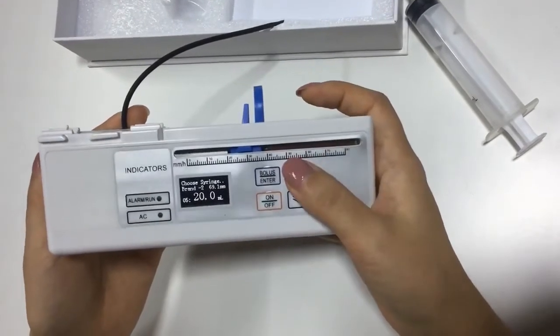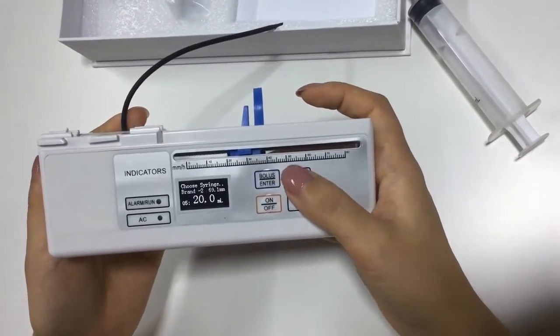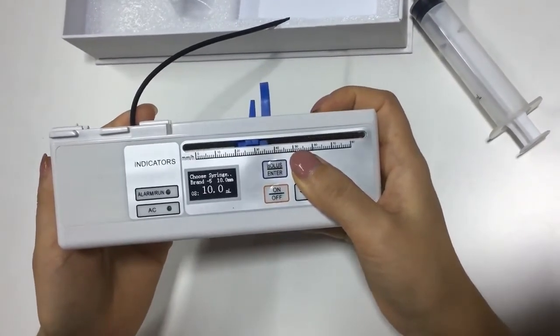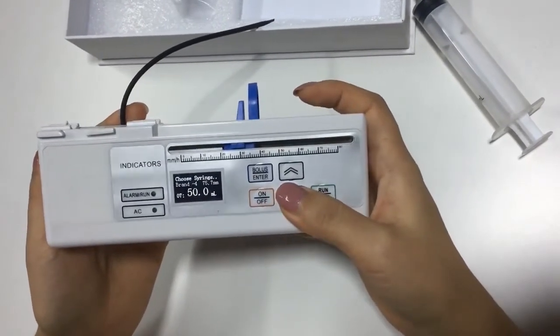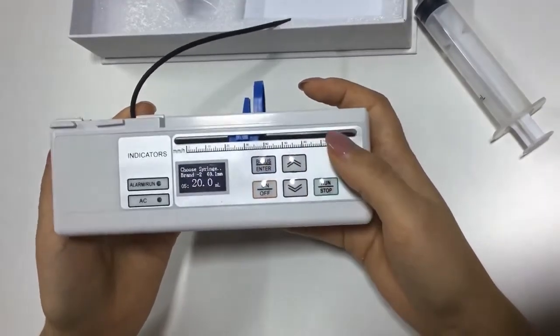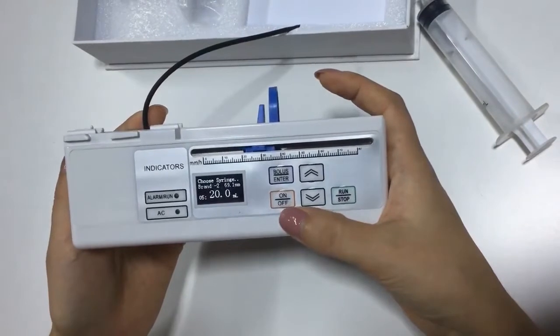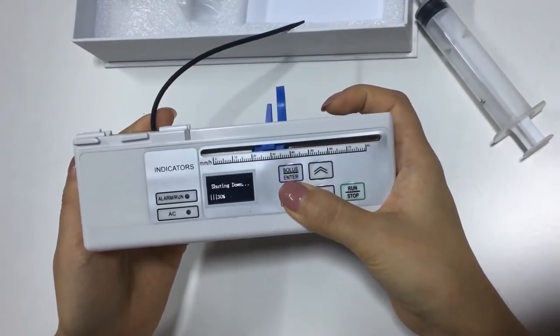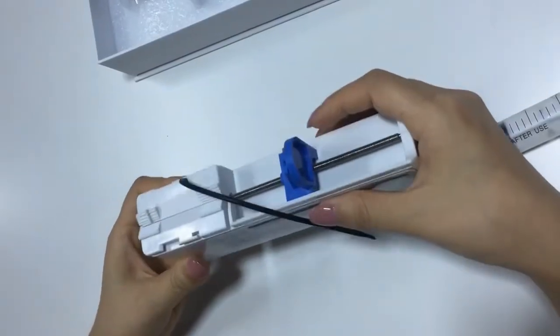You need to calibrate all the storage one by one. We'll take 20ml storage as an example. Then you can turn off the machine. Install the storage.